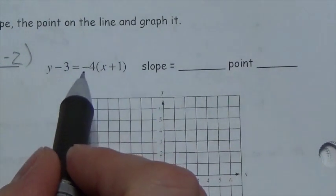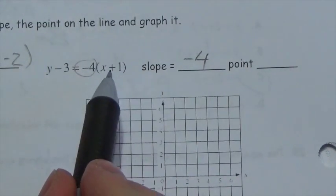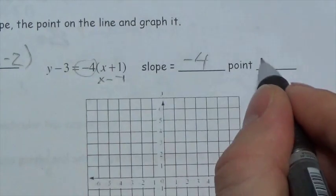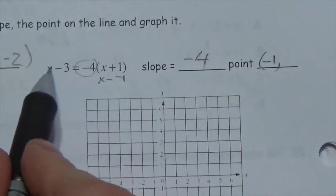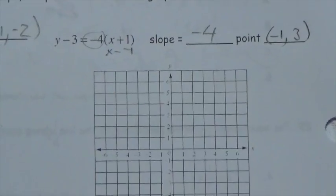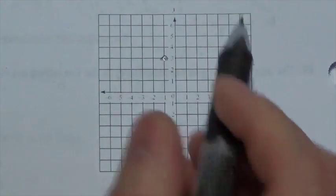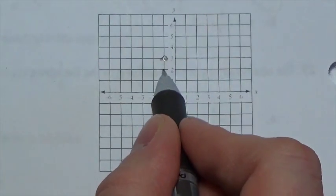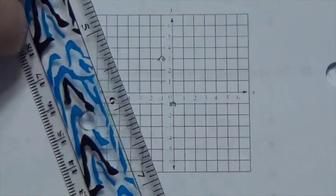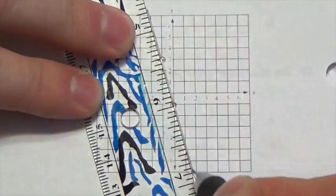The next equation: y minus 3 equals negative 4 times (x plus 1). The slope is negative 4. Since the equation uses subtraction, x plus 1 means x minus negative 1, so the x-coordinate is negative 1, and the y-coordinate is just 3. So we have the point (negative 1, 3) with a slope of negative 4. Plotting negative 1, 3 and going down 4 over 1 gives a second point. Connecting those two points gives my line.